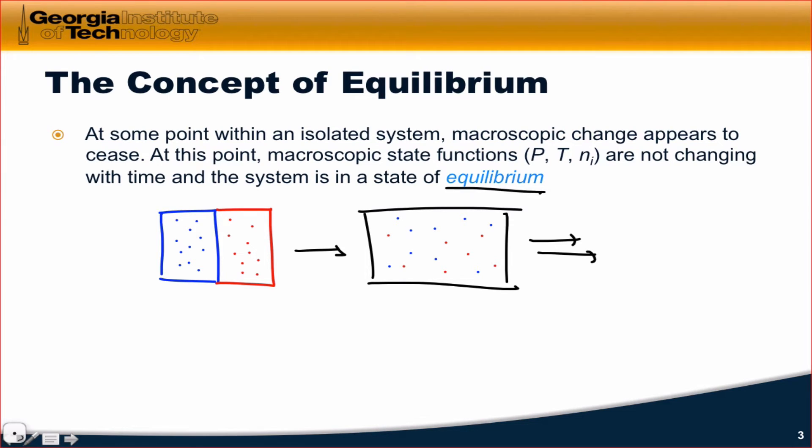The system is in a state of equilibrium because the gases are not changing macroscopically with time. They both have volume V, which is equal to the total volume of the container. They both have equal pressures. They both have equal temperatures. We would notice no change in any of these state variables over time.